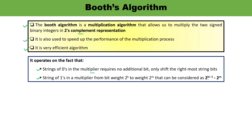Let me take an example. Suppose we have the number +14. It is represented in binary as 0, 0, 1, 1, 1, 0 — with bit positions 1, 2, 4, 8, 16, 32. This is how you can represent the number +14.